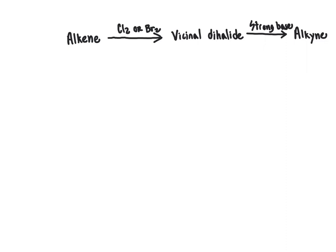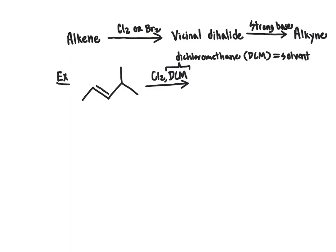Let's look at this reaction in more detail with an example. We start with an alkene molecule reacted with Cl2. Also written in the reaction mixture is DCM — dichloromethane. When you see DCM with a reaction, expect that it is serving as a solvent — just the medium the reaction takes place in, not directly participating.